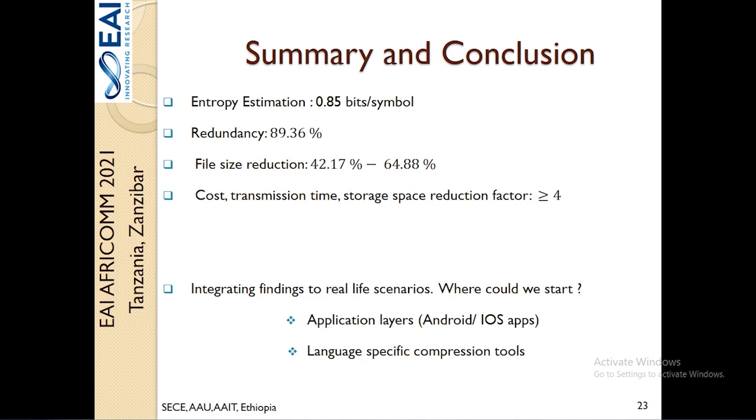In general, when we conclude our estimations, we identified that Afan Oromo only needs 0.85 bits per symbol at the zero crossing point, and it has a redundancy of 89.36 percent. We have also shown that it is possible to compress Afan Oromo from 42 percent to 64 percent. This indicates a cost, transmission time, and storage space reduction that has a factor of four.